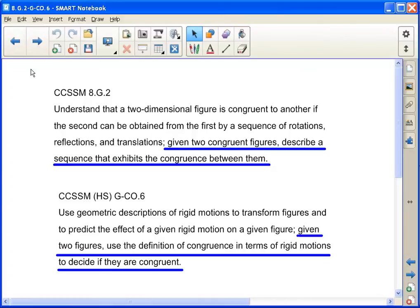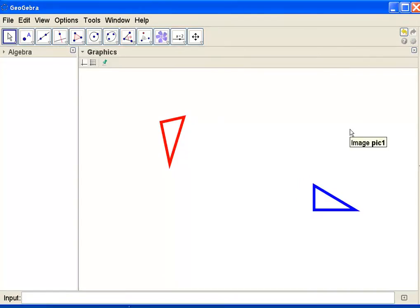Today I'm going to be demonstrating this with GeoGebra. Here I have two triangles that appear to be congruent.